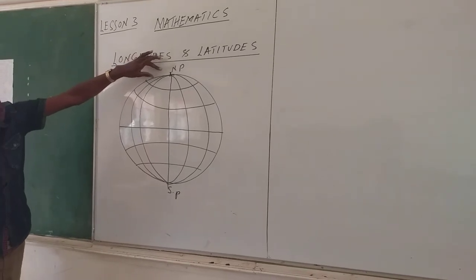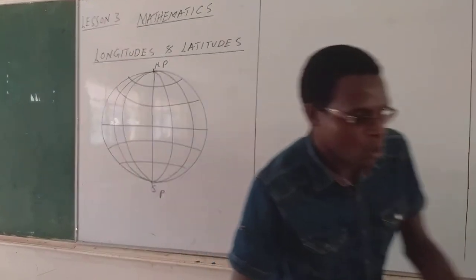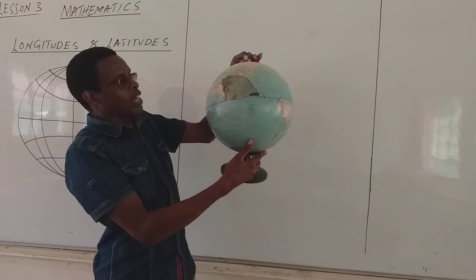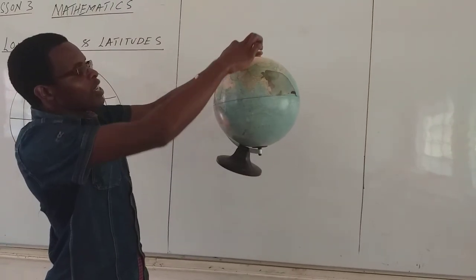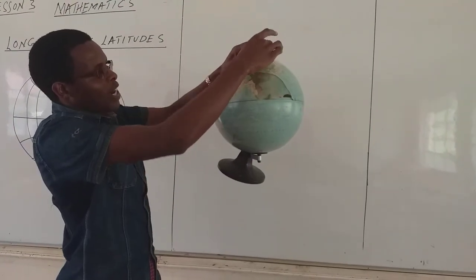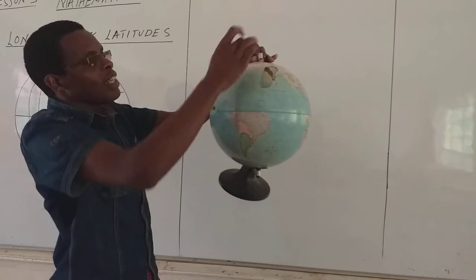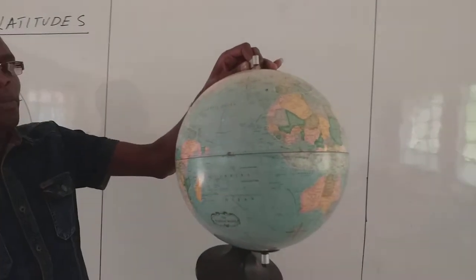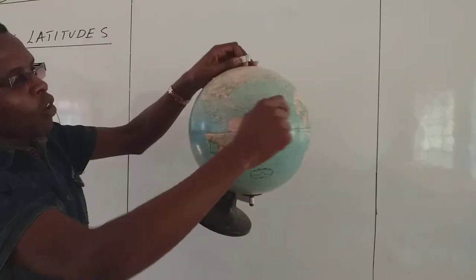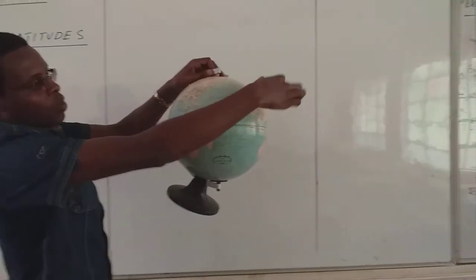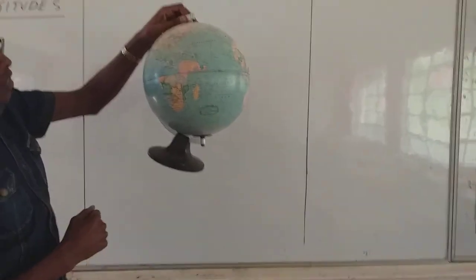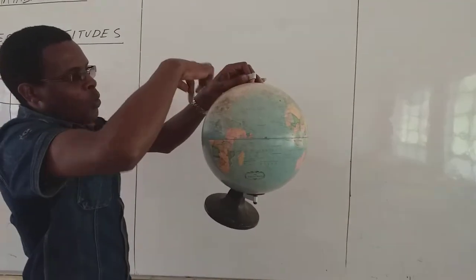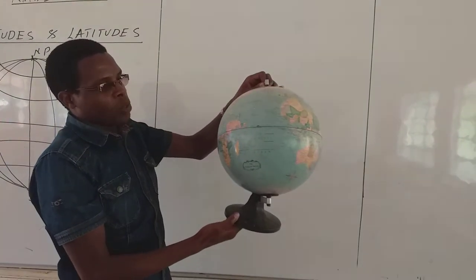This is the globe of the Earth. If you look very closely, we have these lines which are running from North to South — the longitudes. Then you can see the others which are running from East to West, or West to East in that order. This one running from East to West — we call them latitudes. And then, we also have the equator. The equator is also a latitude, because it is running from East to the West part of the globe.